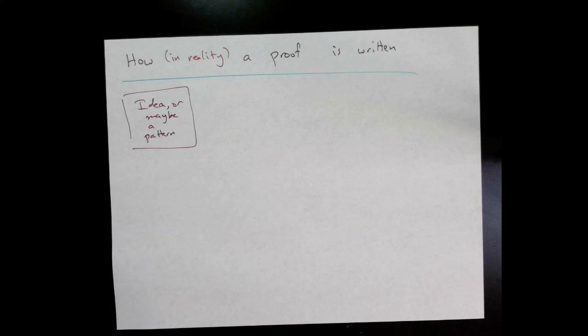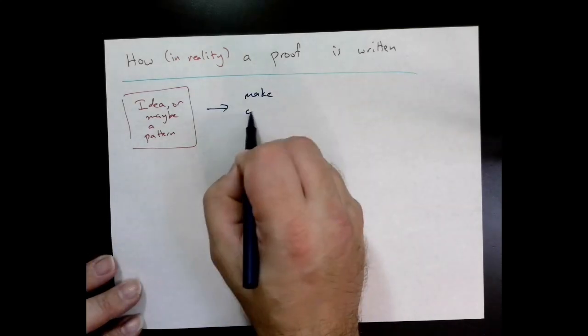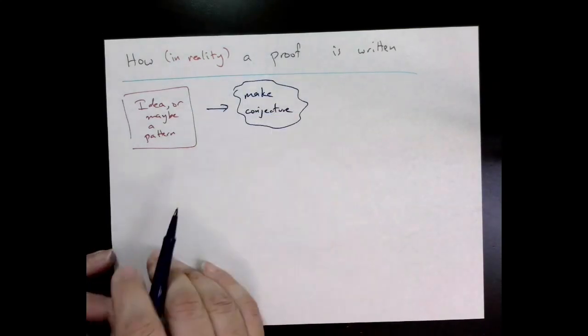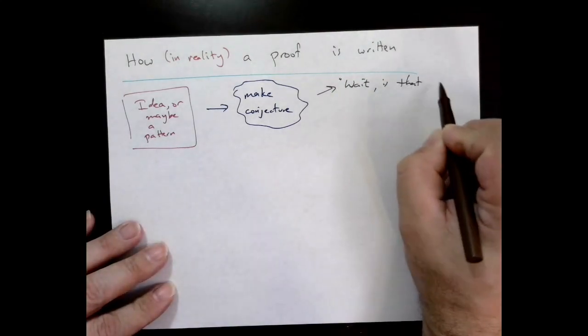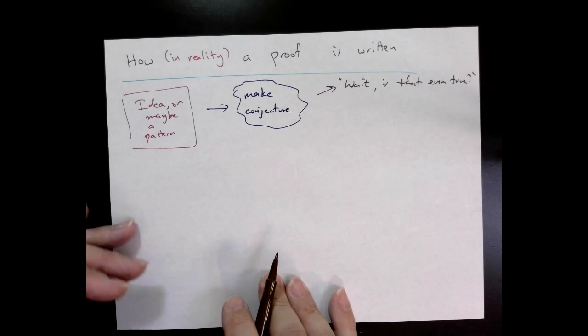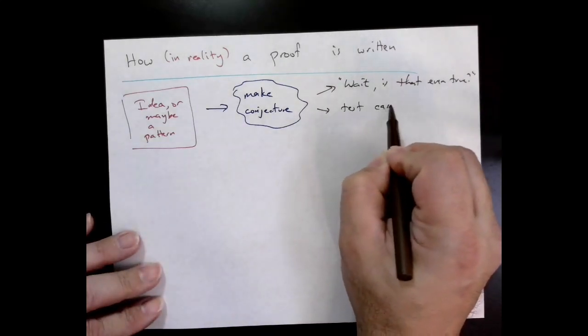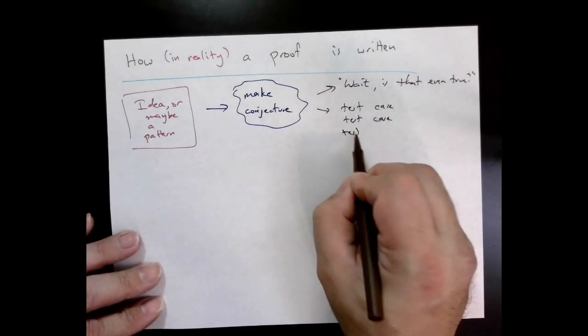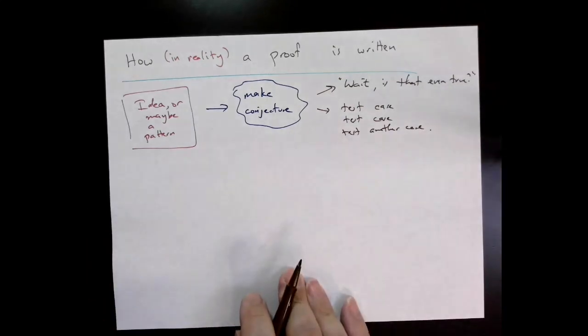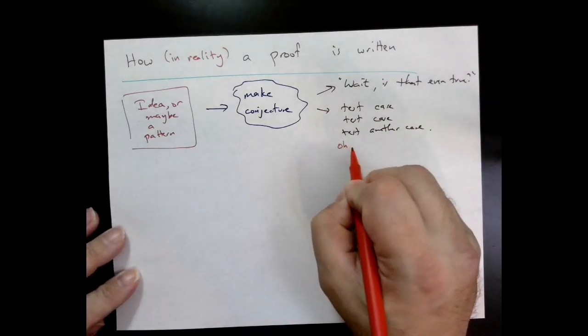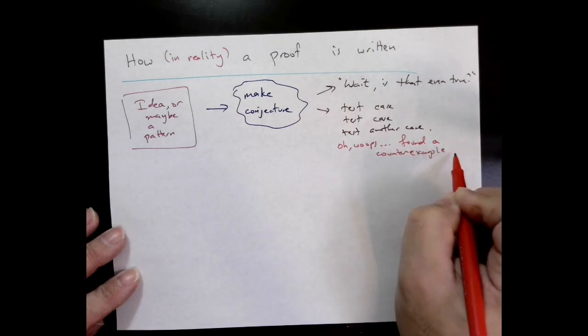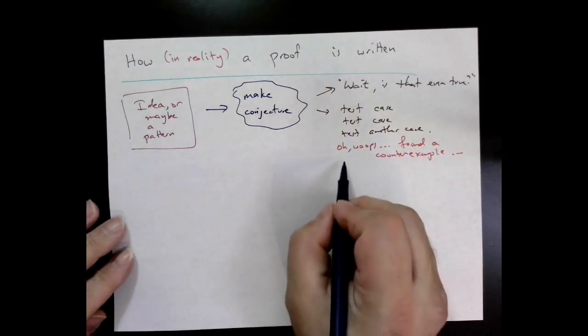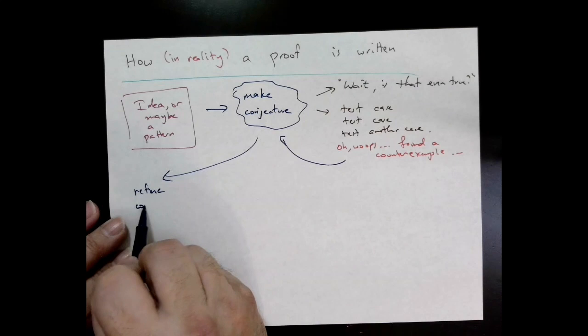Once we make that conjecture, there's still a lot of work to be done. First of all, we have to decide if it's true. A lot of times once we've made the conjecture, we test a bunch of cases—plug in certain variables, test, test, test. Oh, I found a counterexample—my conjecture was wrong. Oh, I need to refine it somehow. The thing I said wasn't quite right, let me refine it a certain way.